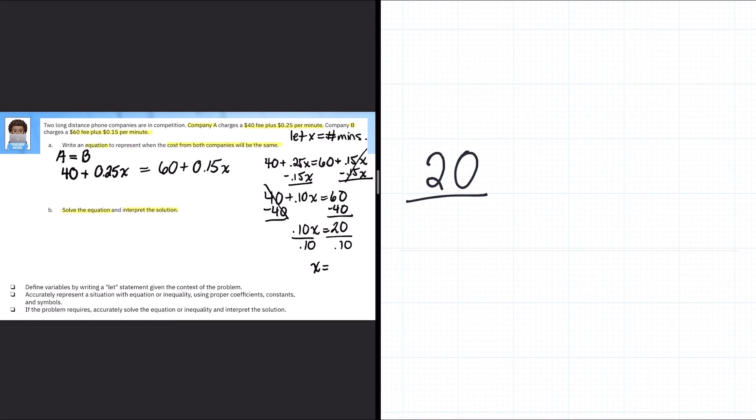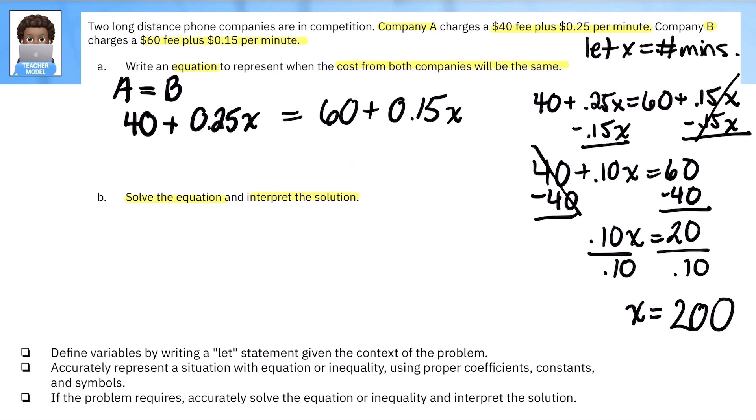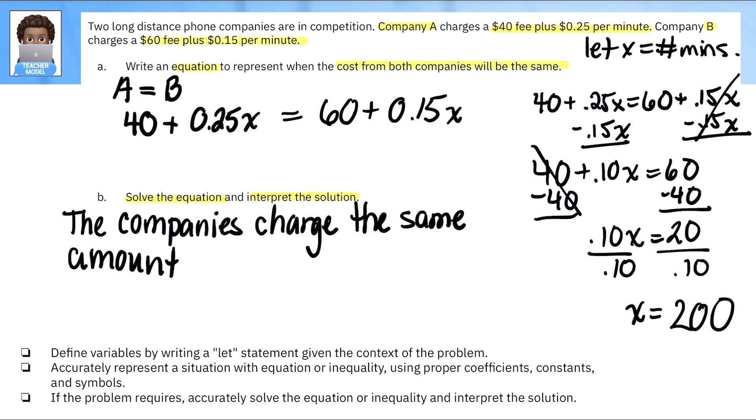And X is equal to what is X to be equal to. I don't have my calculator open. So I'm going to hit pause for a second so I can put my calculator up. Perfect. Here we go. 20 divided by 10 cents is equal to 200. Okay. So here we go. What does this solution mean? In the context, since I know let X be the number of minutes, the companies charge the same amount when X is equal to 200.